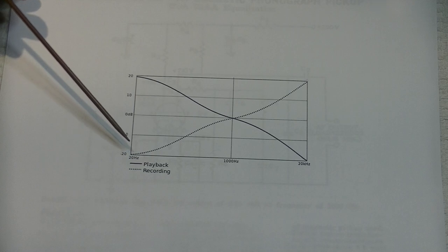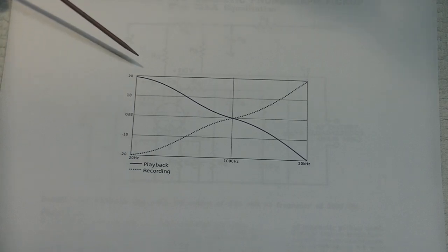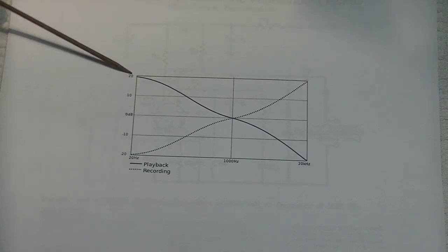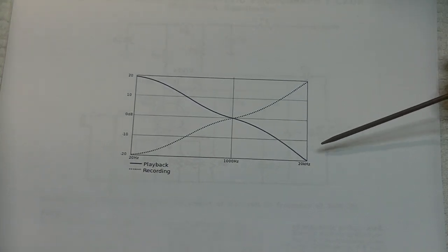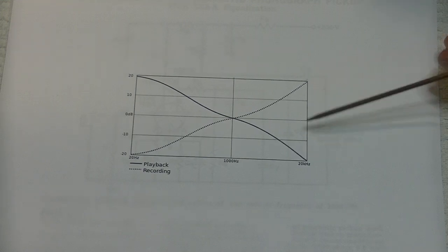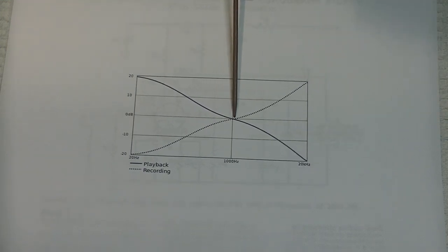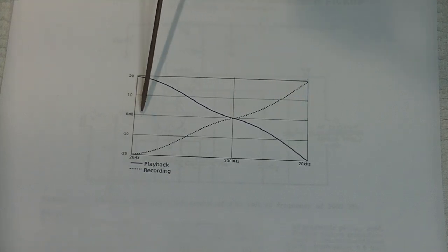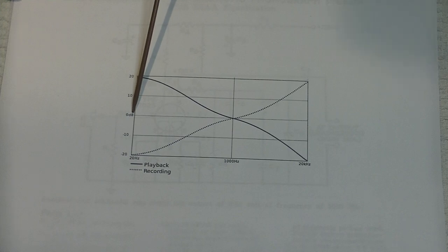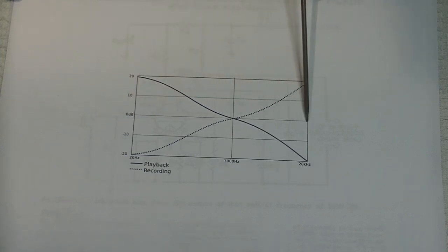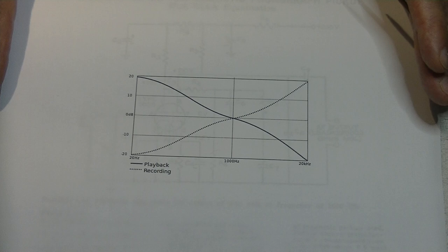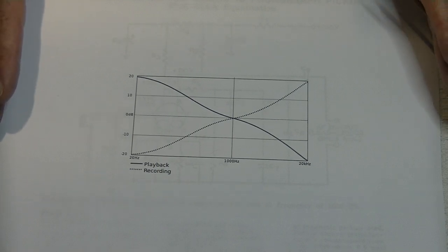So, to equalize this, on playback, your preamp has to apply plus 20 dB in the bass region. And it has to drop 20 dB in the treble region. And at 1 kHz, which is the very top of the midrange, let's say, we don't need to do anything, right? Because you can see we're right where we're supposed to be. And after this EQ is applied, the signal will hopefully be flat. It never is perfectly flat, but it should be close. And then we're good.